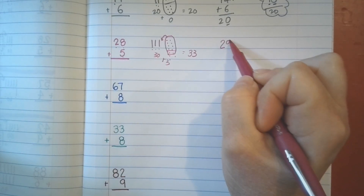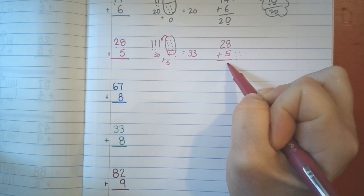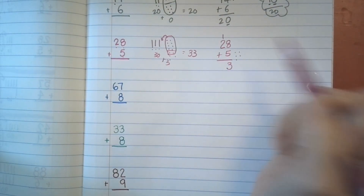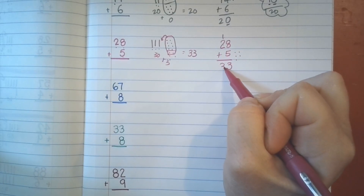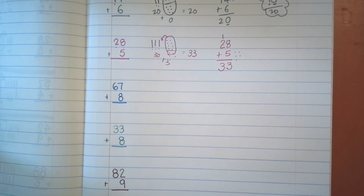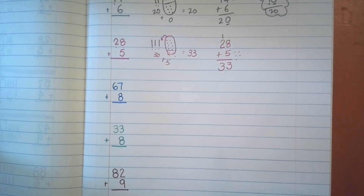Let me just check. Twenty-eight plus five: eight, nine, ten, eleven, twelve, thirteen. Thirteen has a three in the ones place and a one in the tens place. Two plus one is three. Yep. Have you noticed this little strategy I do? I do that to make myself slow down so I don't make mistakes. I still make mistakes sometimes, but that's okay — I learn from them.